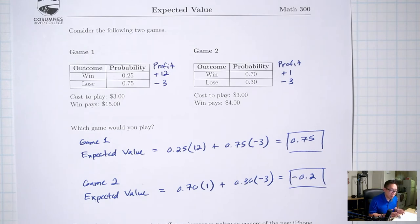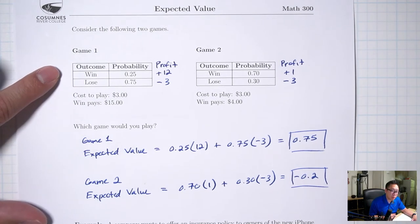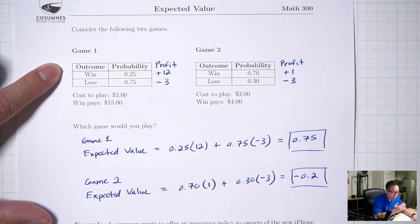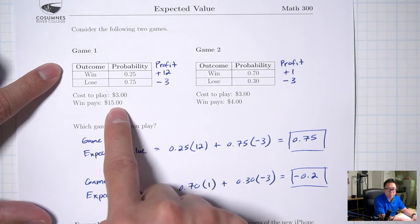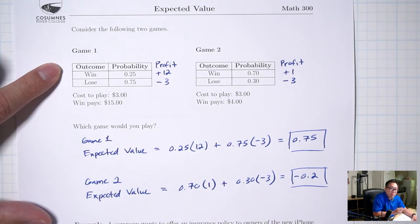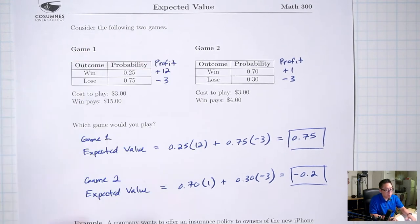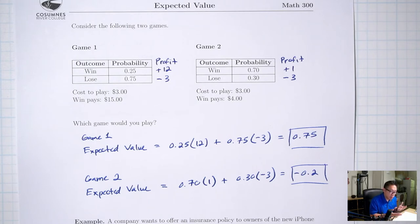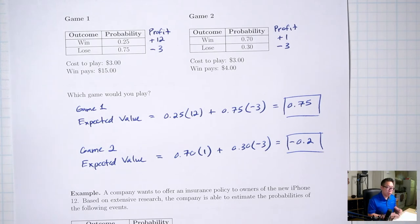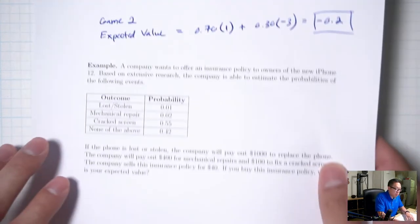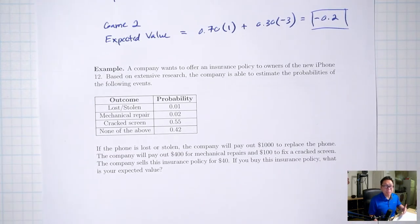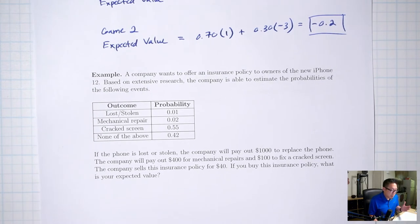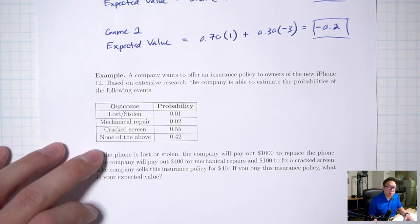If you're only going to play the game once, would you pick game one or game two? That's a different story. Game one, most of the time you're actually going to lose, and the only way you profit in the long run is to wait for that big win. If you're playing once or twice, you might not make it to that big win. Whereas game two, most of the time you actually win — you just don't win a lot. So for insurance, even though it's negative expected value, you might still want to buy a policy.